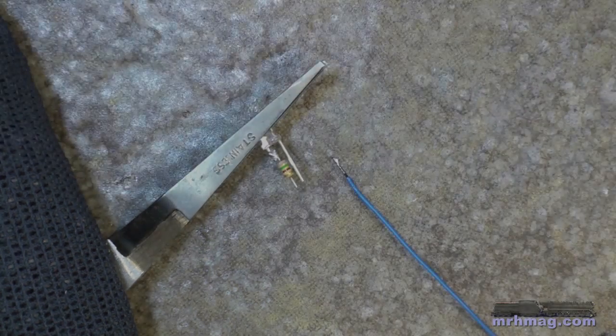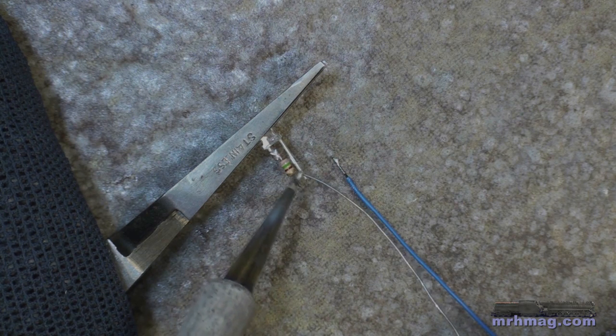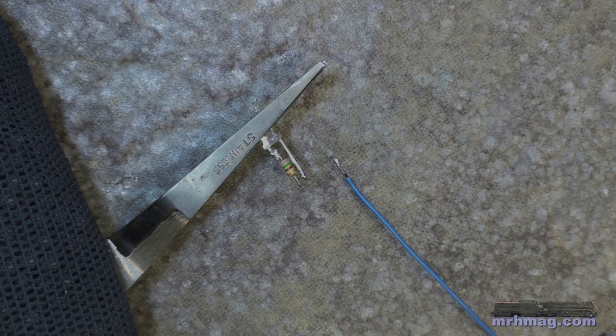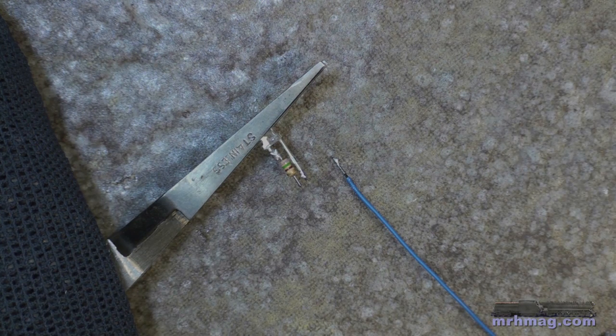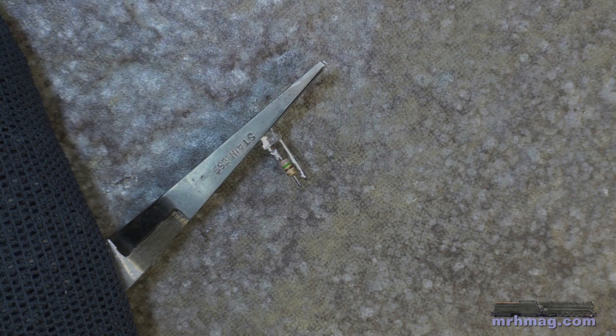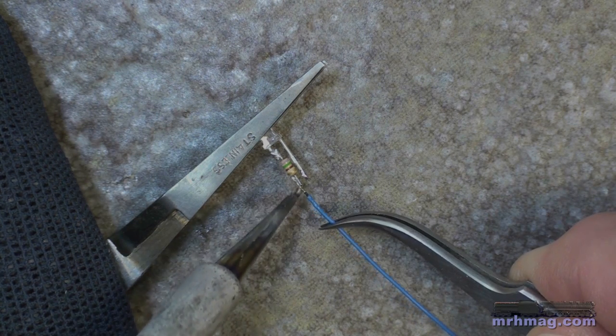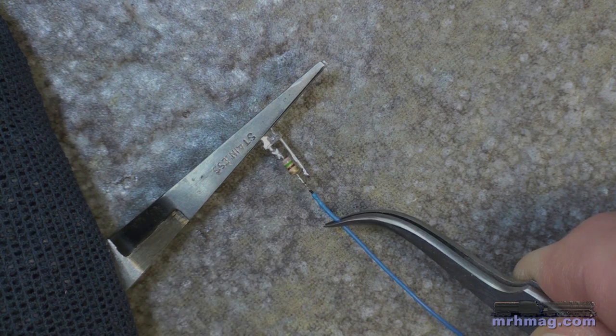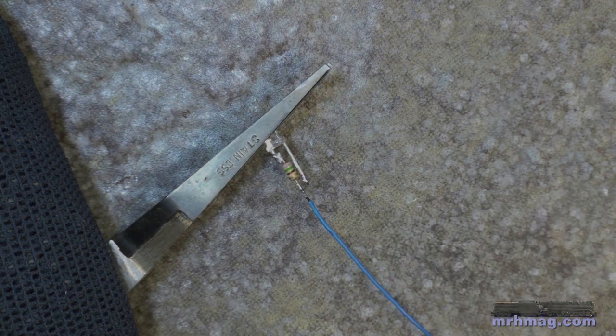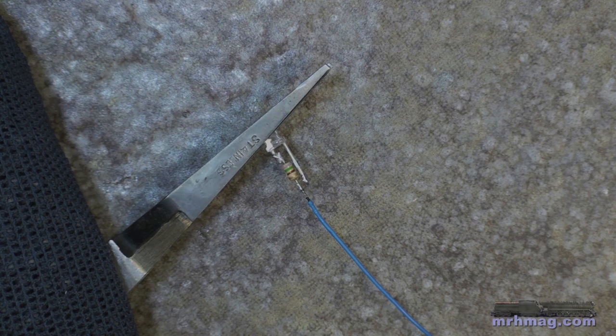First, I need to tin the resistor and the LED lead. You'll notice I'm not using any flux. I don't see any need for flux in these sorts of operations. We come in... There we go. A little tug on it. Now I've got a good, solid connection.